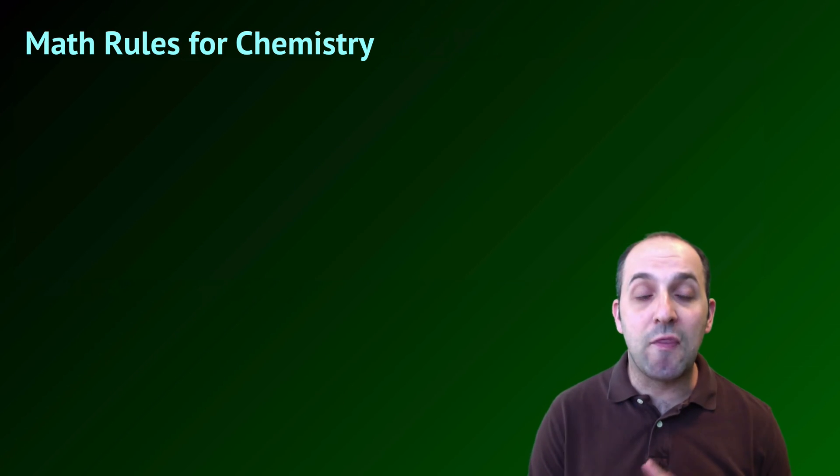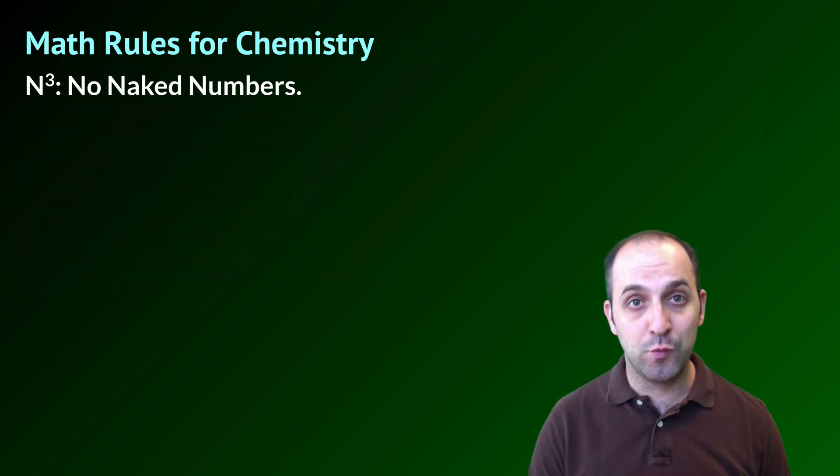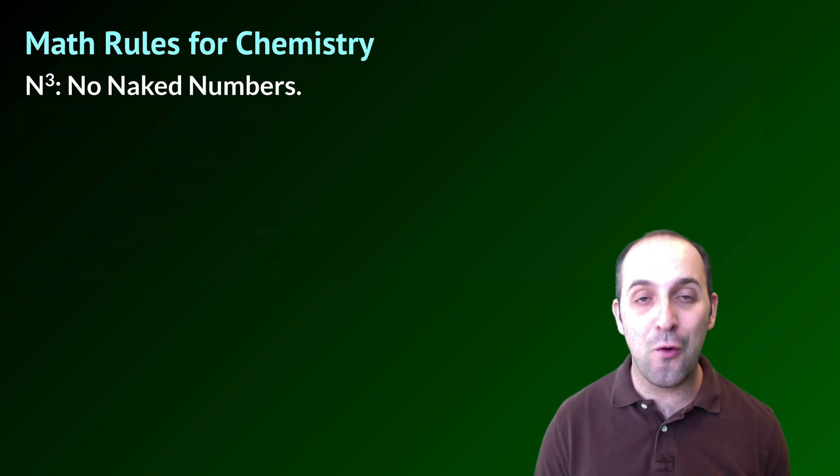This is as good a time as any to talk about the math rules that we're going to use in chemistry. There are only a couple, but I think it's really important that you get a good handle on them. The first is the N cubed rule, and N cubed just stands for no naked numbers.